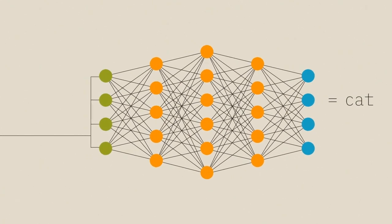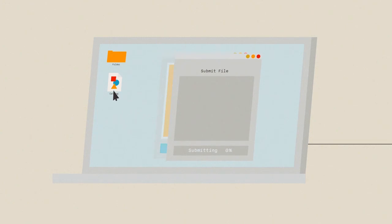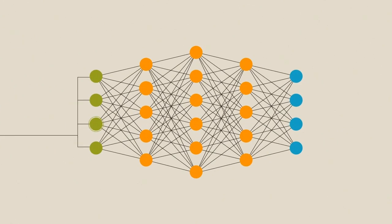But DNNs are susceptible to attack, specifically where an attacker can modify an input to produce an incorrect response. By adding an imperceptible amount of noise to an image, it completely alters the internal activations in the DNN, leading it to misclassify the image.